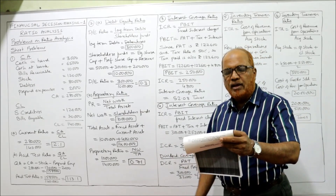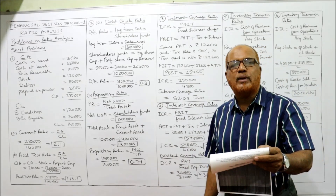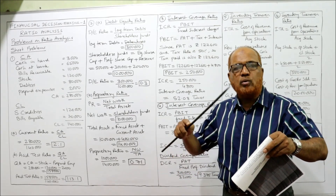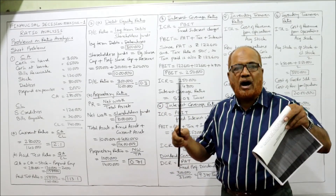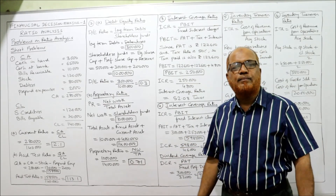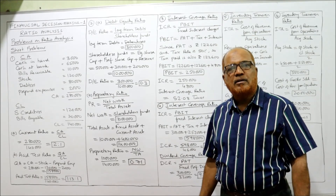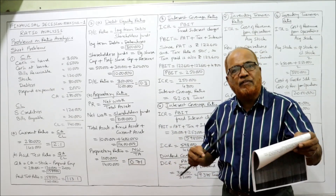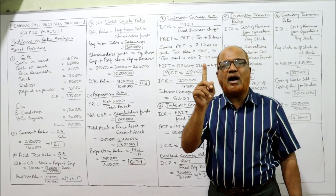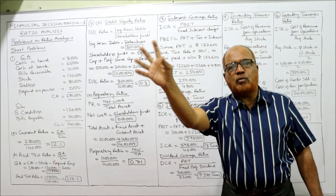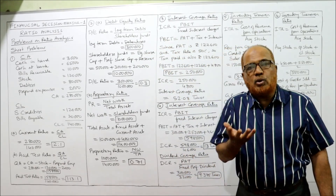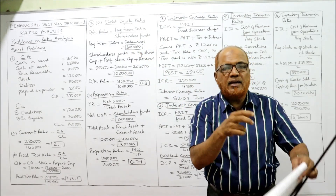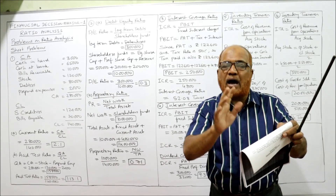Now the third problem. The net income of Simco Limited is 1,22,600 after tax at 50%. That means 50% tax has been paid out of profit, and after paying 50% tax the remaining is 1,22,600. So if we earned 100 rupees and paid 50% tax, 50 rupees is tax and 50 rupees remains. Similarly here: PAT is 1,22,600, and tax paid is also 1,22,600.